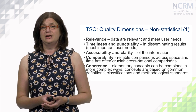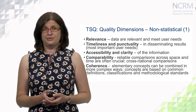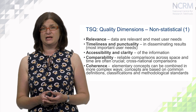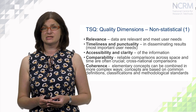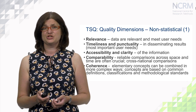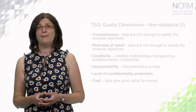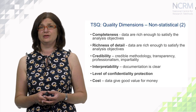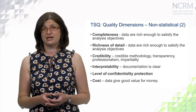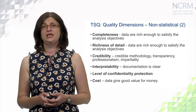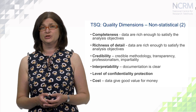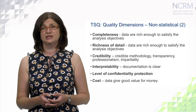Coherence — when the data are coherent, we can use elementary concepts and they can be combined in more complex ways, based on common definitions, classifications, and methodological standards. Also, completeness and richness of detail means that data are rich enough to satisfy the analysis objectives. Credibility of data is also an important component of the non-statistical dimension of total survey quality.